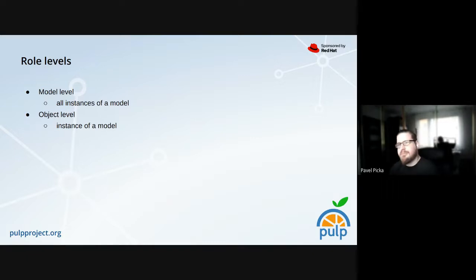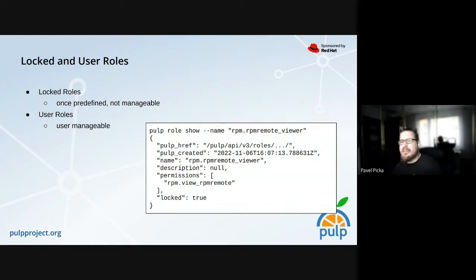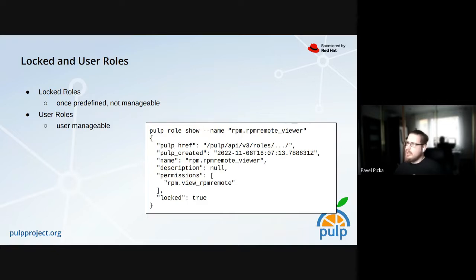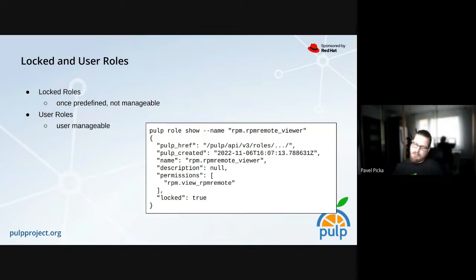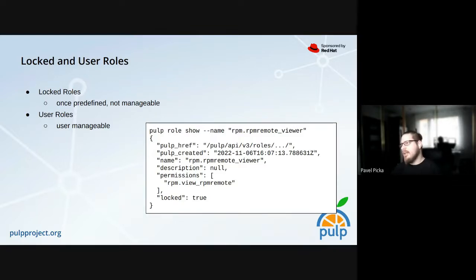Sometimes it doesn't apply as you'd expect — a good example is the 'add' permission, where you can create something and you don't know what yet, so it doesn't apply at object level and isn't checked. There are two flavors of roles: locked and user roles. Locked roles are predefined — the user cannot change, remove, or disable them. Only developers or plugin writers can create or manage these roles.